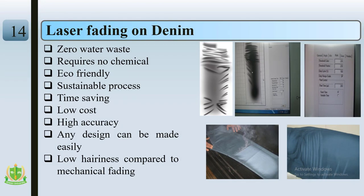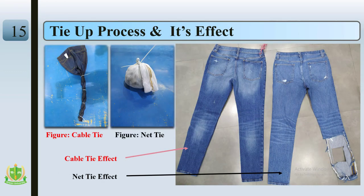Previously discussed dry processes — created mechanically or by hand — can all be implemented on denim using the laser fading system. The advantages of laser fading include: zero water waste, no chemicals required, eco-friendly, sustainable process, time saving, low cost, high accuracy, and no harm compared to mechanical fading.